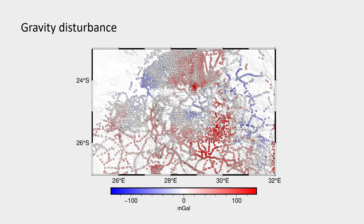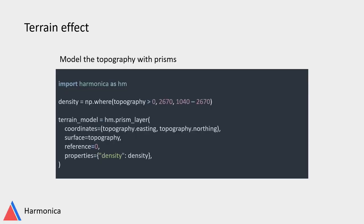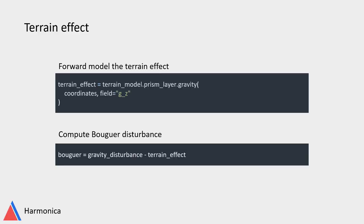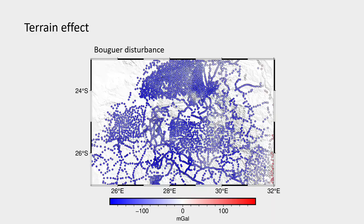We know that gravity disturbance is highly affected by topographic masses, so the next step is to remove the terrain effect. We can use Harmonica to define a 3D model of the topography from a DEM and assign densities to each rectangular prism that forms that 3D model. In the middle you can see all the observation points with the gravity disturbance. I added some padding to the topography to account for border effects. We then forward model the 3D prism model to get the terrain effect, and removing it from the gravity disturbance yields the Bouguer disturbance.